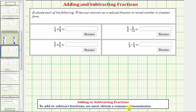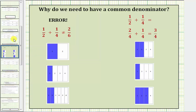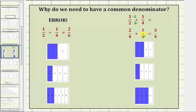Let's look at a model before we begin. Consider one-half plus one-fourth. Notice how the least common denominator would be four, which means you'd have to multiply one-half by two over two to obtain an equivalent fraction with a denominator of four. So instead of one-half plus one-fourth, we have two-fourths plus one-fourth. Because our denominators are the same, we'll be adding pieces of the same size.